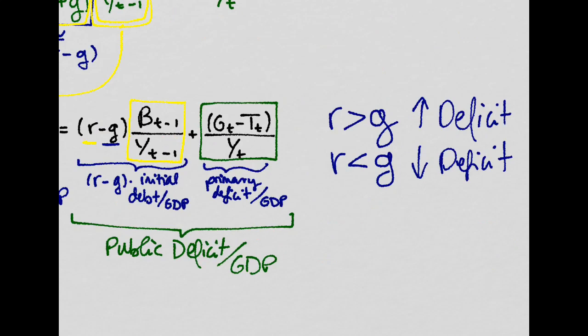So let's concentrate on this. If the interest rate we're paying on the debt is higher than the growth rate of the economy, then this will be positive, and then we will be increasing the public deficit.